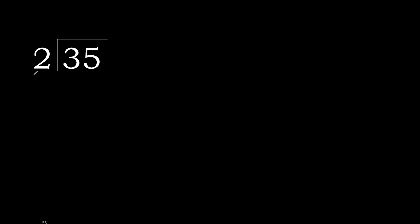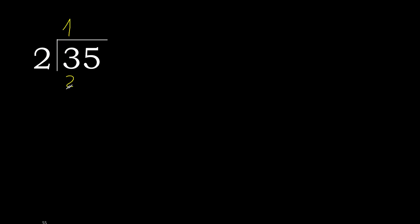35 divided by 2. Starting with 3: 3 is not less, so we work with 3. 2 multiplied by which number is nearest to 3 but not greater? 2 multiplied by 1 is 2, which is not greater. 3 minus 2 is 1.